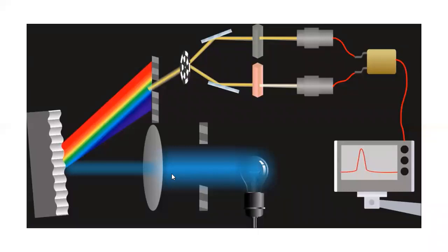Then you have the monochromator, which has four things. First, you have the entrance slit. What is the main work of the slit? Because the incident light is coming in a broad range, the slit breaks it into small fractions. The slit permits only a small fraction of incident radiation to pass. So first, you have the entrance slit — its job is to pass the incident ray in small fractions.